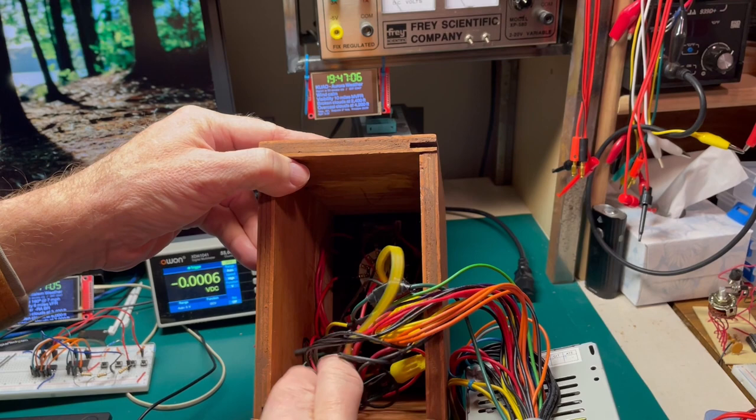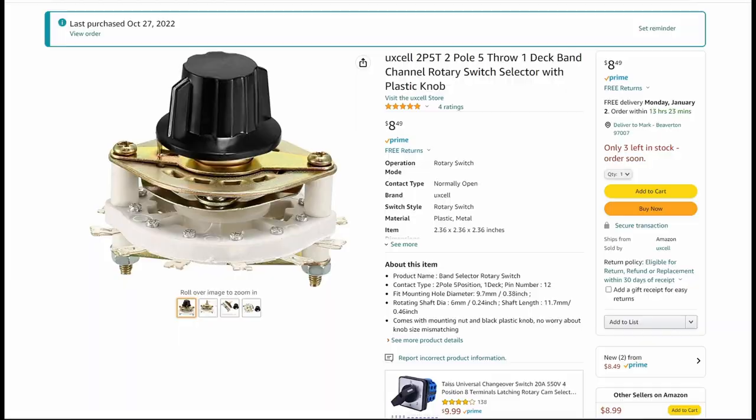If you look in the very back, you can see there's a rotary switch that I used to switch the voltages. I've got a two-pole, five-throw switch. One of the poles is used to turn the power supply on and off, and then the other one is used to switch between the voltages.